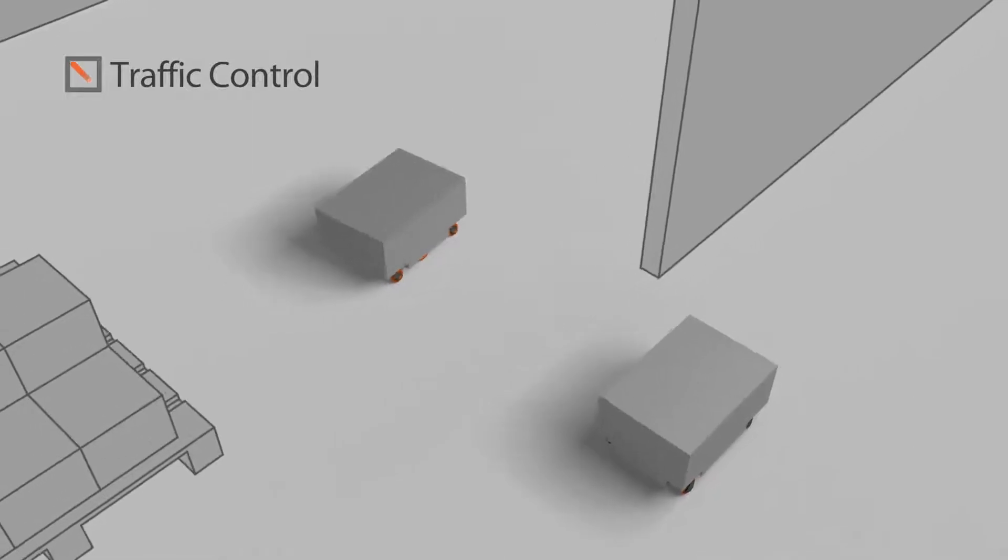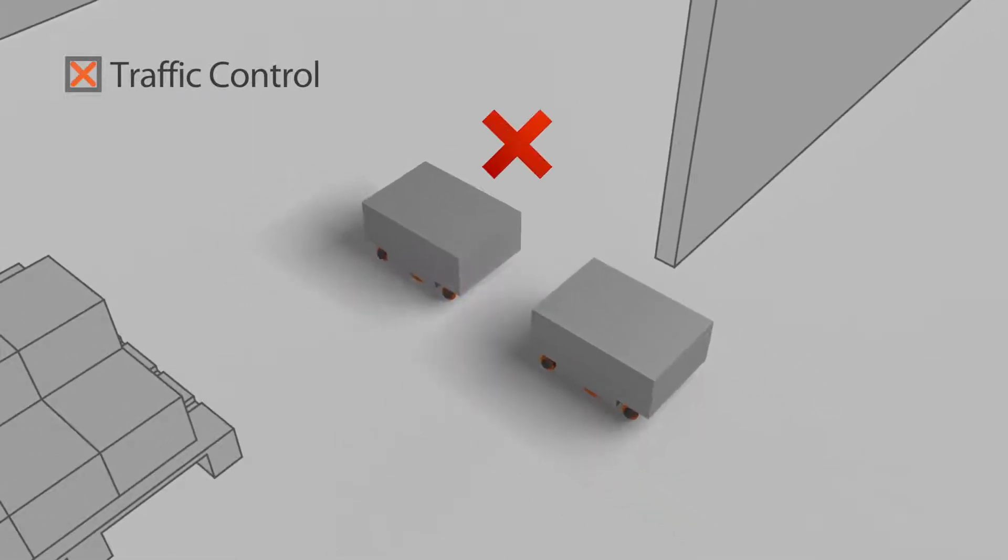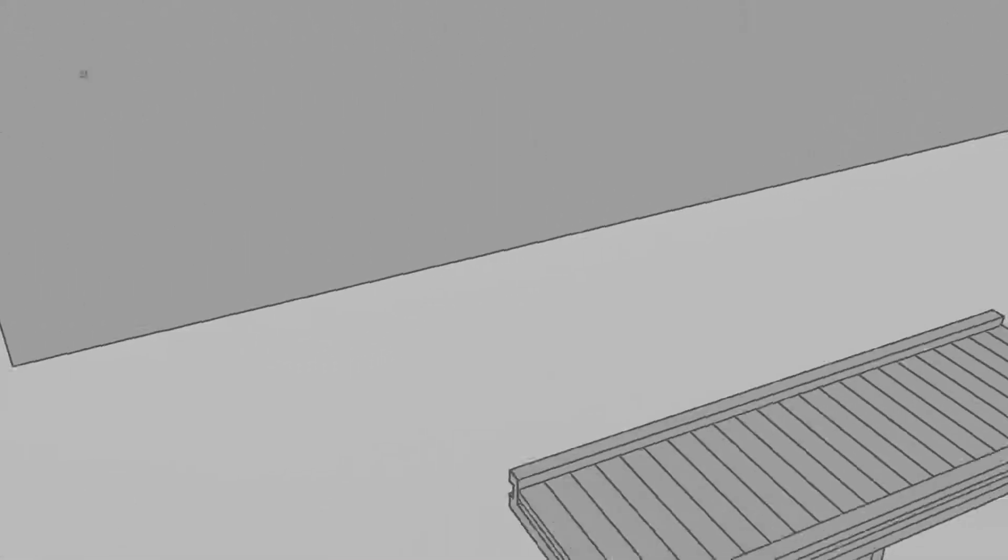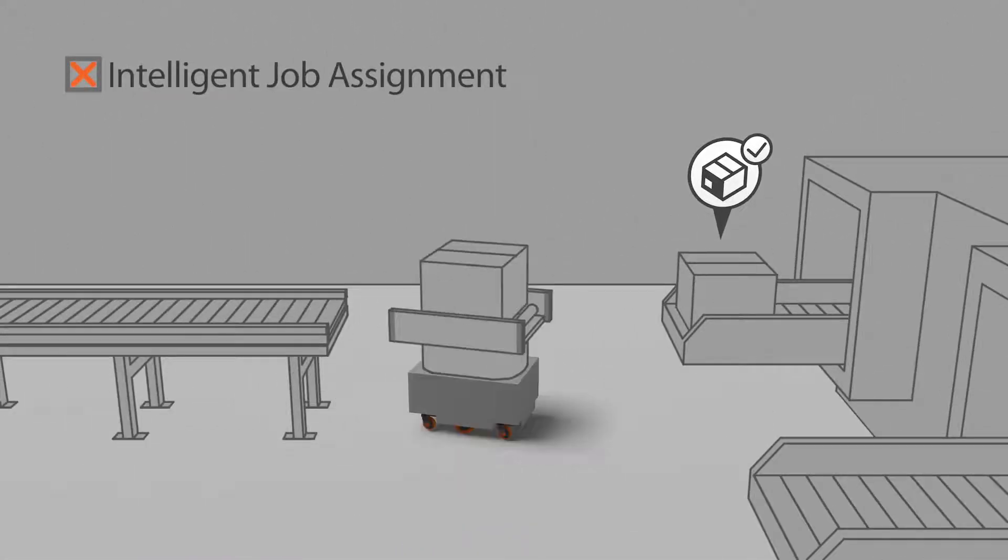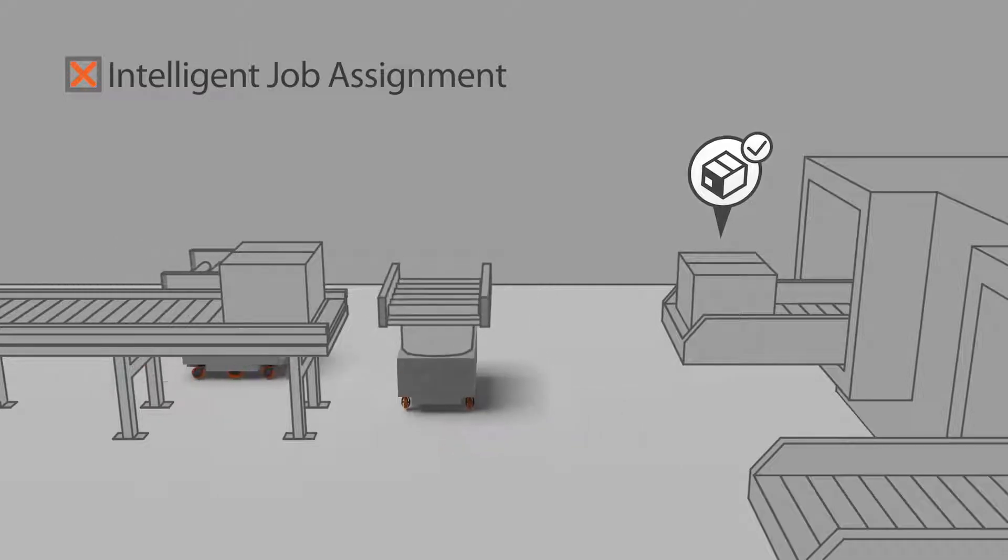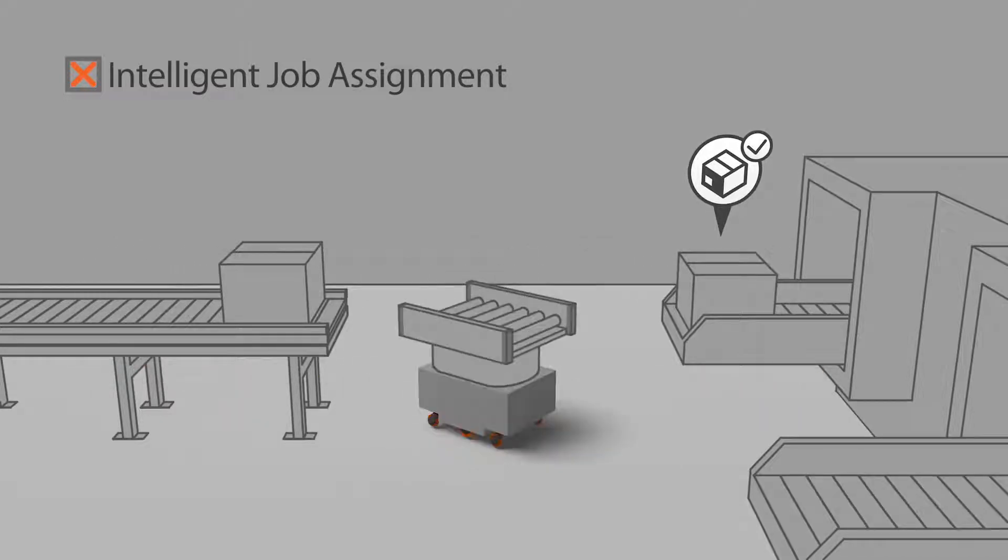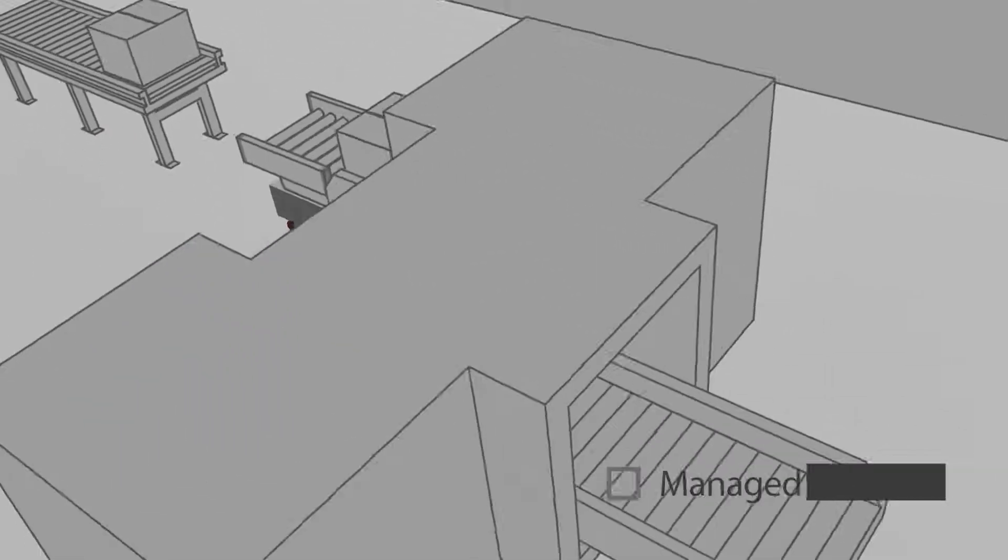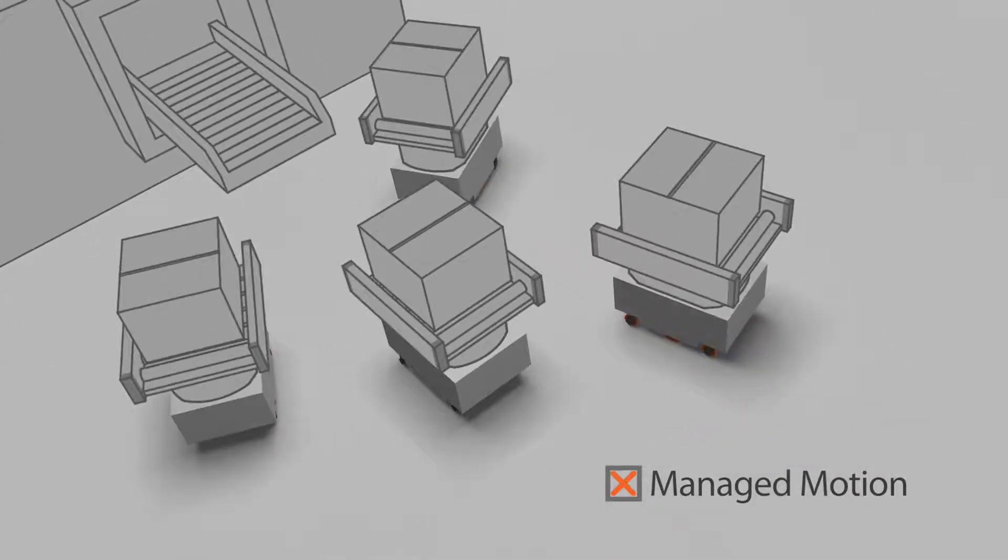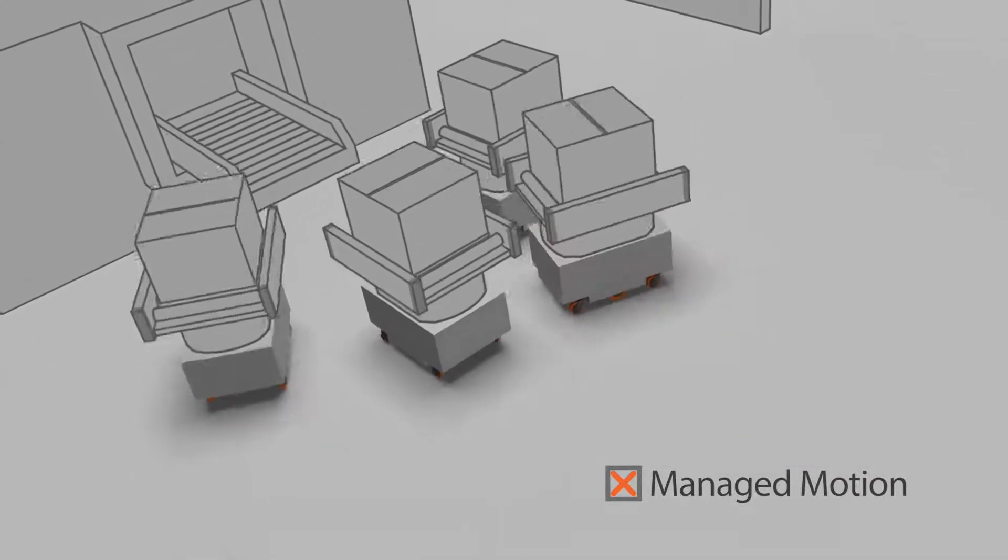Without Enterprise Manager's centralized intelligence, robots can get stuck when another robot unexpectedly blocks their way. Robots will waste time by sticking to their original order of assignments, even if that isn't the most efficient order. And when robots can't cooperate, traffic jams can occur when they arrive at the same place at the same time.